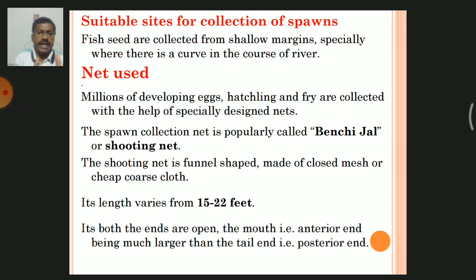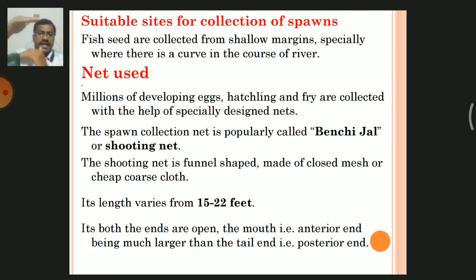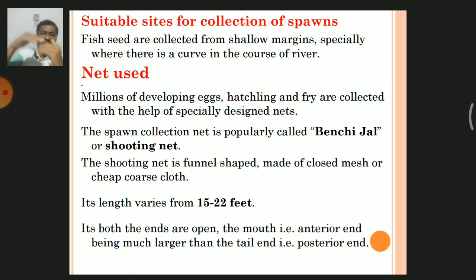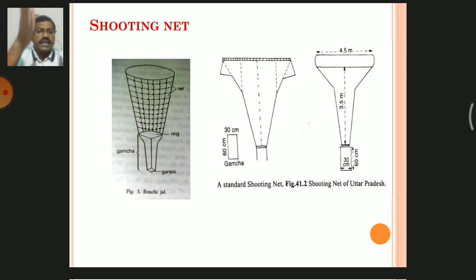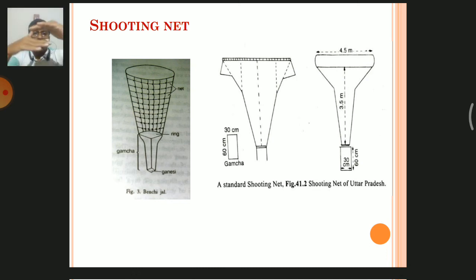The shooting net's length varies from 15 to 22 feet. Both ends are open — the anterior end and the posterior end. The mouth, that is the anterior end, is much larger than the tail end, which is the posterior end and is narrow. The mesh size is very small, the anterior end is broader, and the posterior end is narrow.